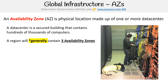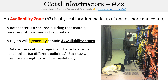A region will generally contain three availability zones — I say generally because there are cases where there are less than three. There are very specific reasons for having exactly three availability zones. Data centers within a region will be isolated from each other, so they'll be in different buildings, but close enough to provide low latency — probably sub-millisecond — because you want it to feel like it's on the same network.